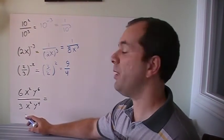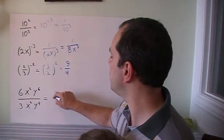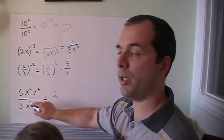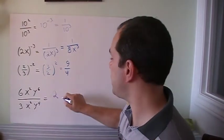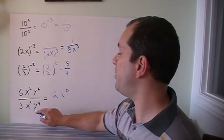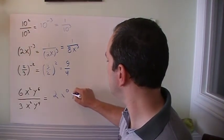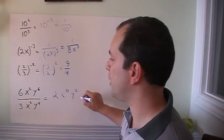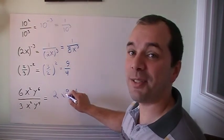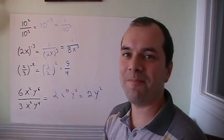And the last one. Let's put everything together. 6 divided by 3, those are coefficients, so 6 divided by 3 is just 2. x squared divided by x squared, well, 2 minus 2 is x to the 0. y to the power of 6 divided by y to the power of 4 is y to the power of 2. x to the power of 0 is equal to 1, so that leaves us 2y squared. That was interesting.